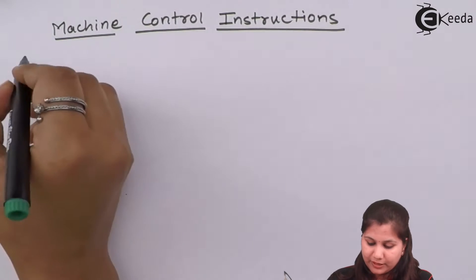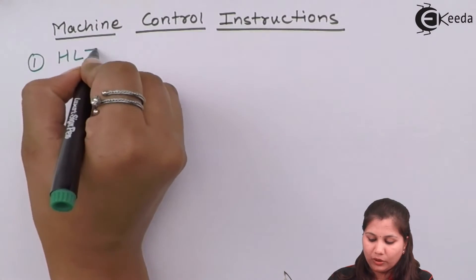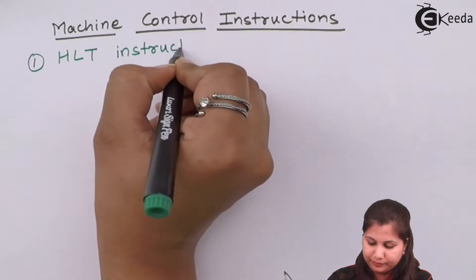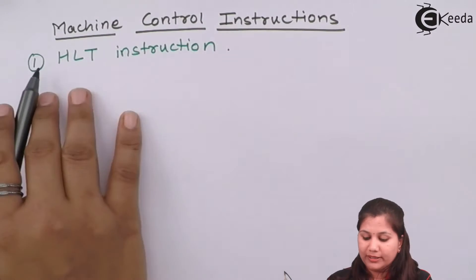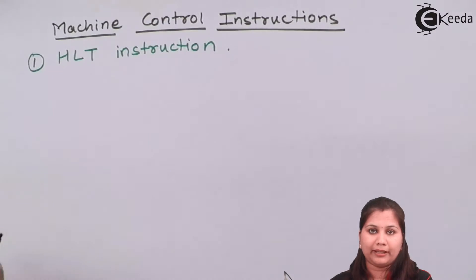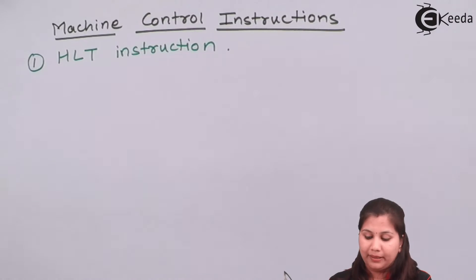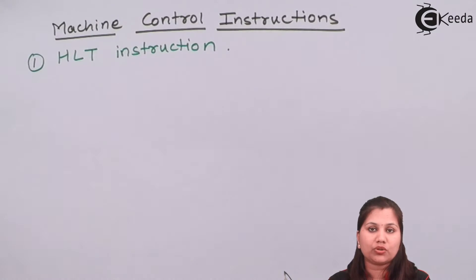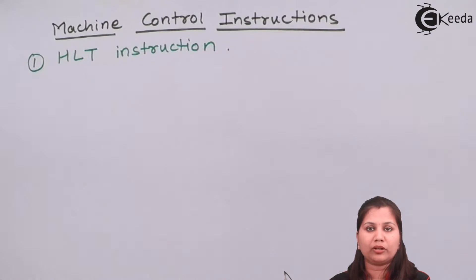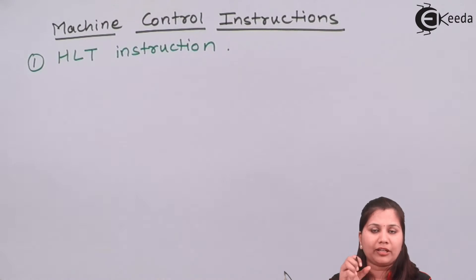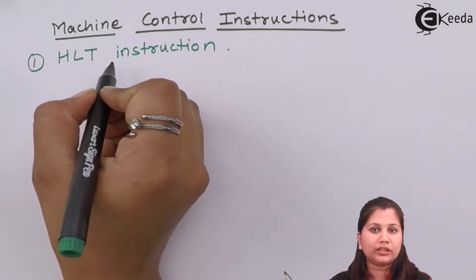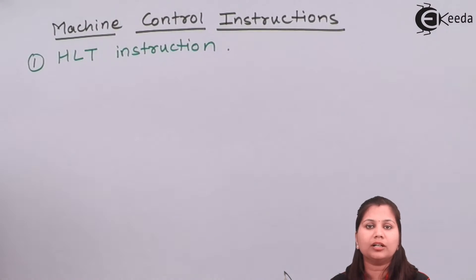The first instruction is the HLT or HALT instruction. Whenever it is written in the main program, this instruction is going to stop the execution — it makes the 8086 microprocessor stop the execution and fetching of instructions. The microprocessor's main functioning depends on fetching the instruction, then decoding it, and then executing it. So when HALT is written, the microprocessor will stop fetching and execution of instructions.